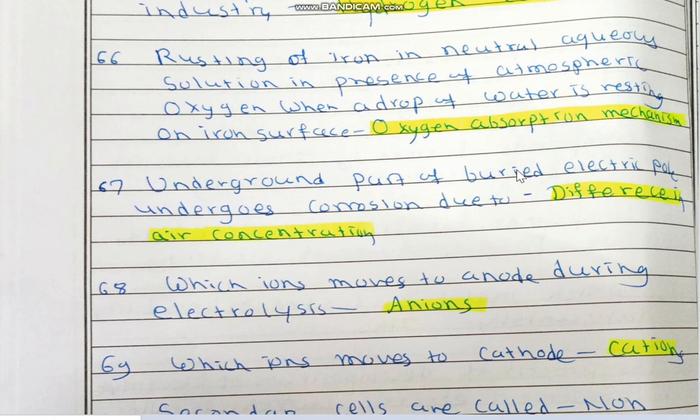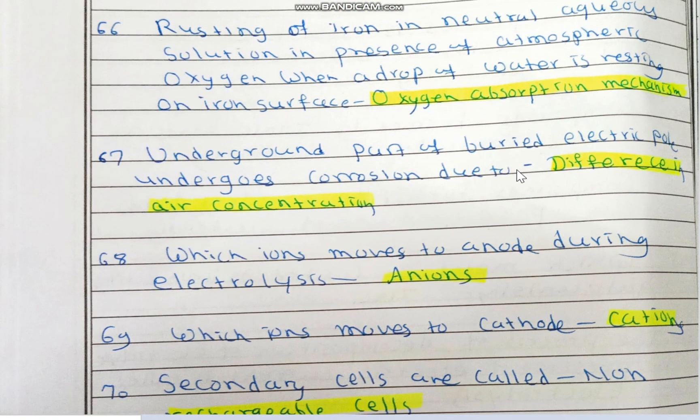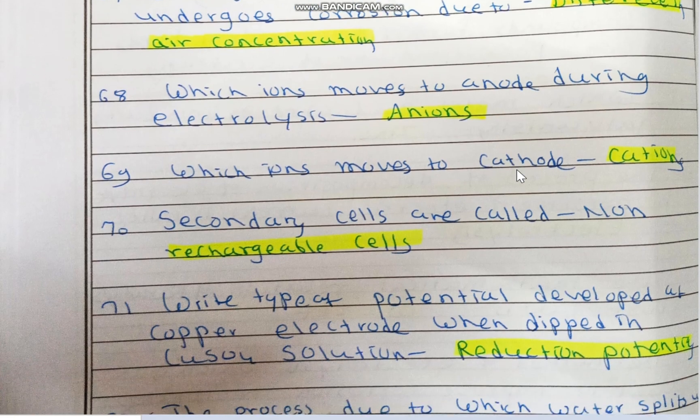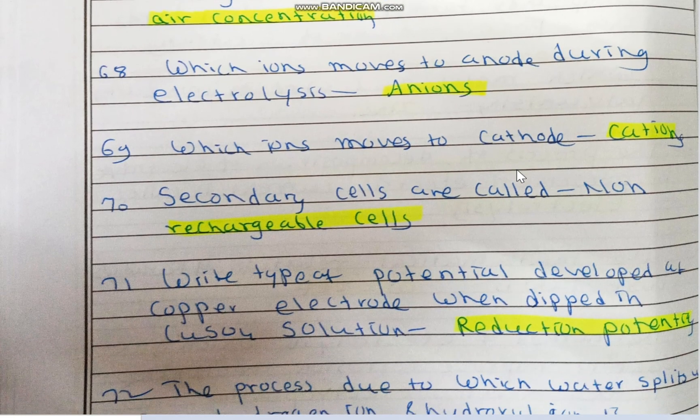The underground part of a buried electric post undergoes corrosion due to differential air concentration, meaning less access to oxygen. During electrolysis, anions move to the anode while cations move to the cathode.